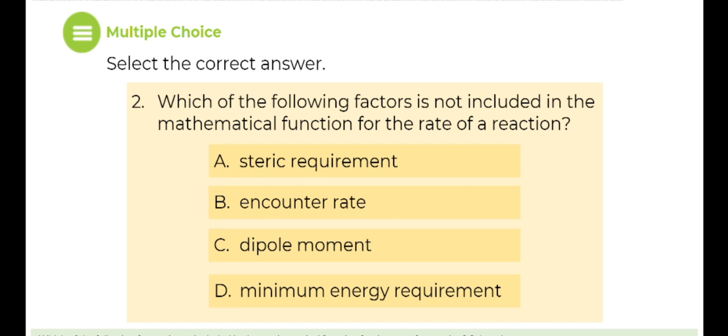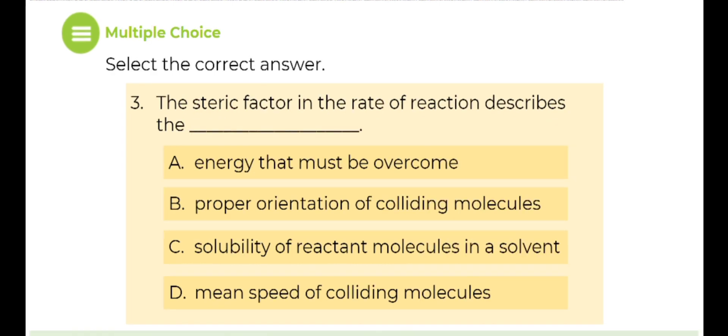Number two. Which of the following factors is not included in the mathematical function for the rate of a reaction? Number three. The steric factor in the rate of reaction describes the blank.